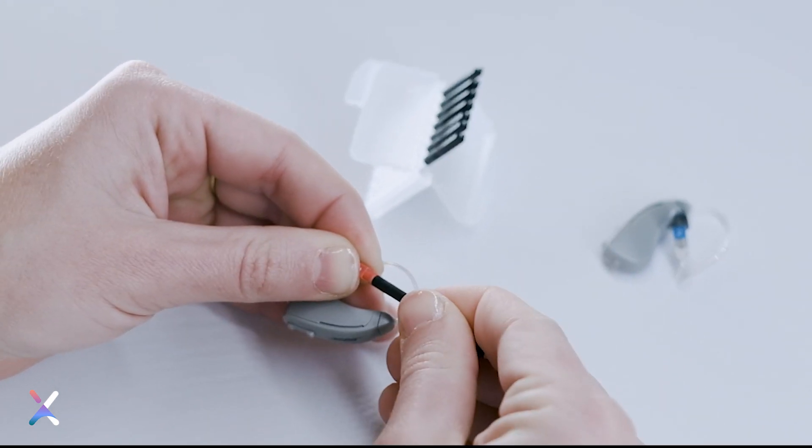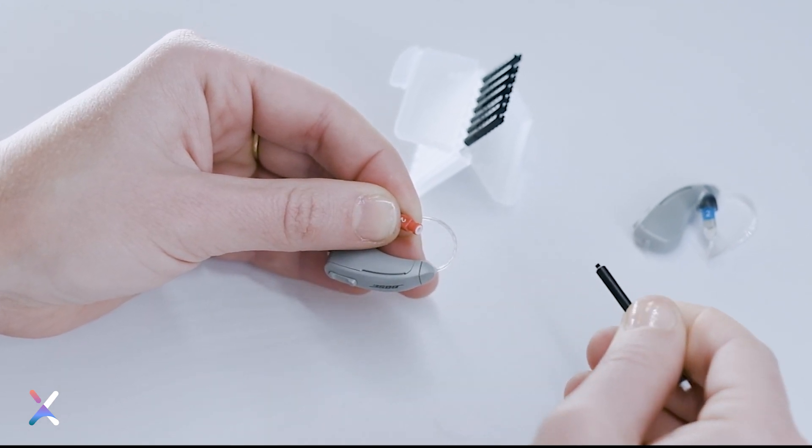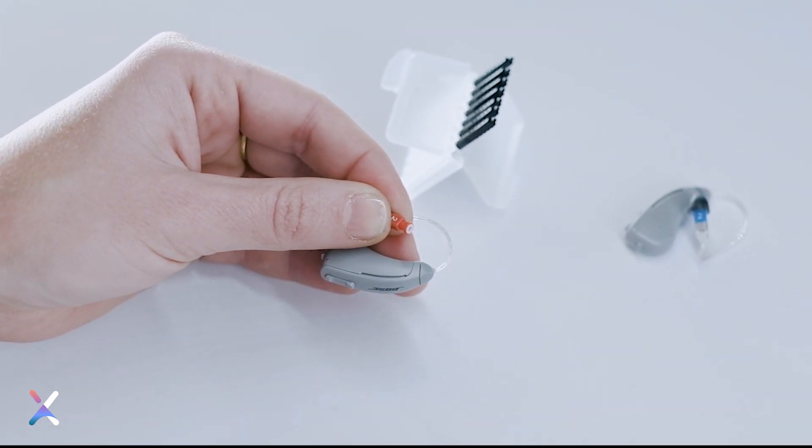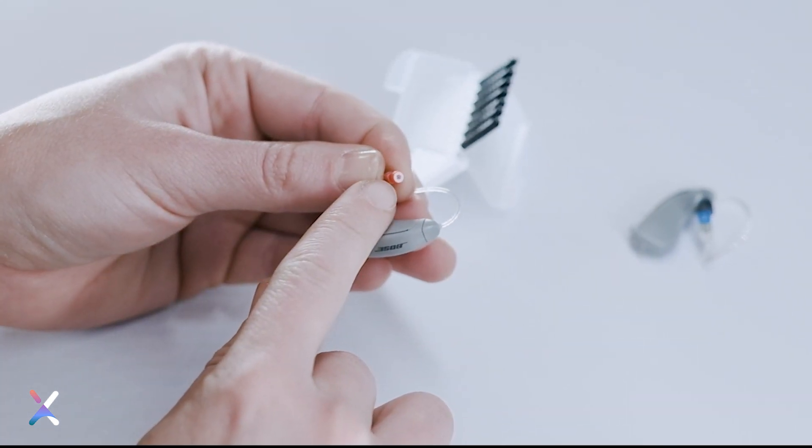Guide the new wax guard into the receiver so that it's flush with the top of the receiver. Then pull the tool straight out. Make sure the wax guard sits flush against the receiver.